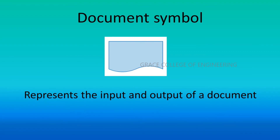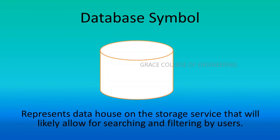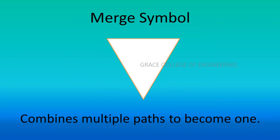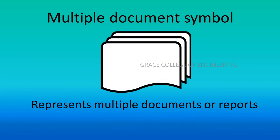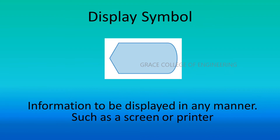The document symbol represents the input and output of a document. The database symbol represents data housed on a storage service that will likely allow for searching and filtering by users. The merge symbol combines multiple parts into one. The multiple document symbol represents multiple documents or reports. The display symbol represents information to be displayed in any manner, such as on a screen or printer.